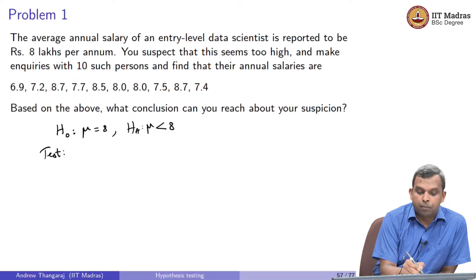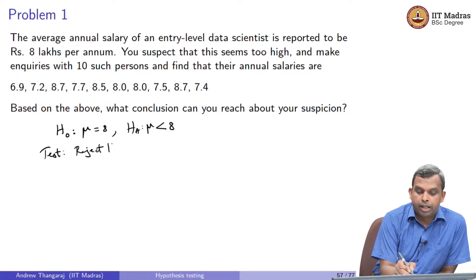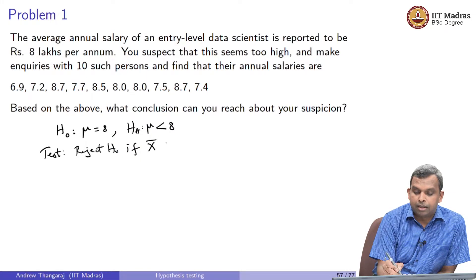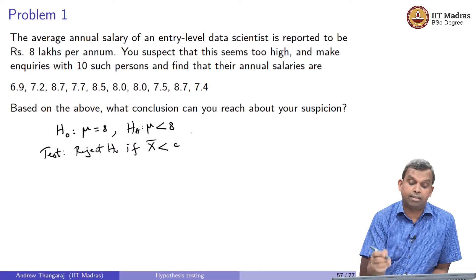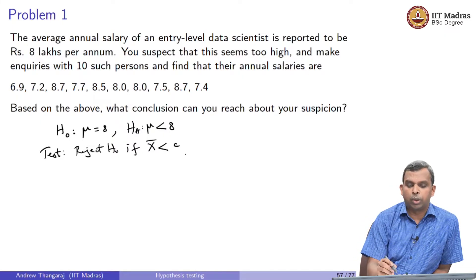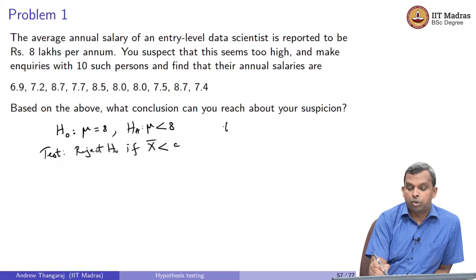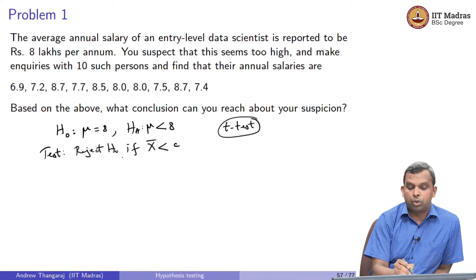Your test is going to be: reject H₀ if x̄ is less than c. You are accepting the alternative if x̄ is too low. Notice here the samples are given but the variance of the samples is not given, so what you will be using is the t-test. Since we do not know the variance, we use the t-test.